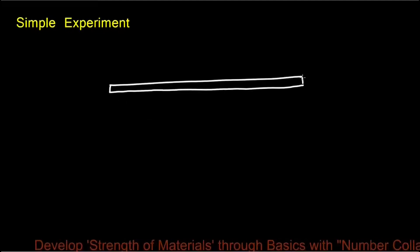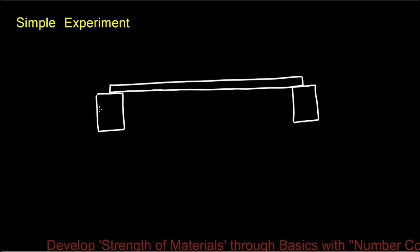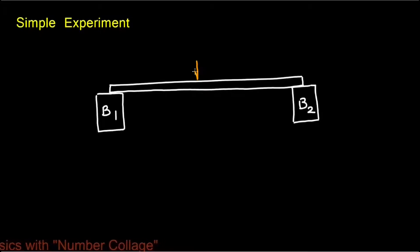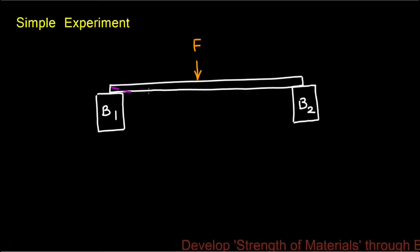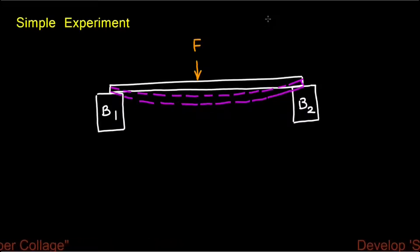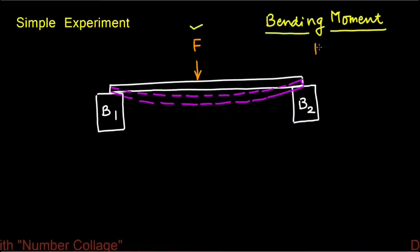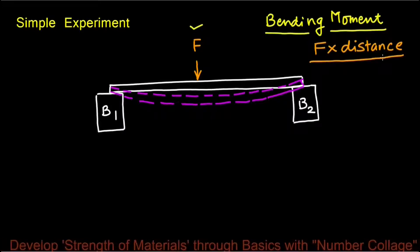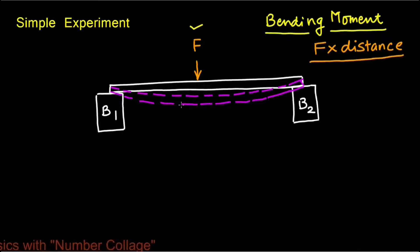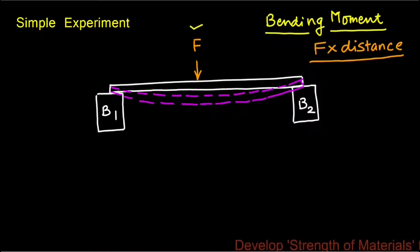We can understand shear force and bending moment with a simple experiment. We will keep a one-foot-long scale on two wooden blocks B1 and B2. If we apply increasing force F in the middle, initially the scale will bend down because of the bending moment, which is the force F multiplied by its distance from the support.